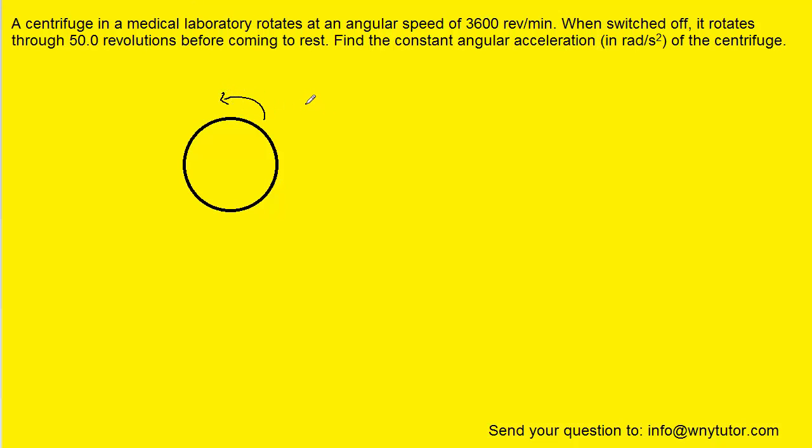That way we could say that its initial angular velocity is positive 3600 revolutions per minute. Now one of the problems right off the bat here is that revolutions per minute is a non-standard unit. We have to convert it into radians per second.